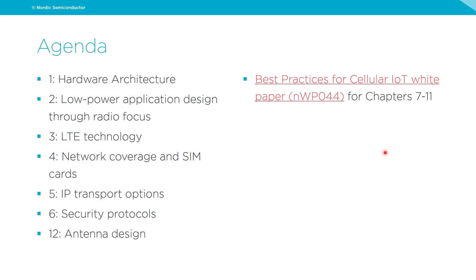For today's agenda, I'll be going through the first half of the best practices for cellular IoT development white paper — specifically chapters 1 to 6 and also chapter 12. The reason I'm including chapter 12 is that antenna design is super important to get good performance and to really use the NRF 9160 SIP to its optimum. We may do a part 2, but if you want to check out chapters 7 through 11, feel free to go to the best practices white paper.